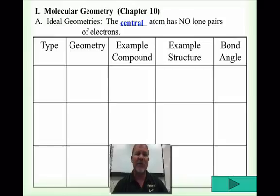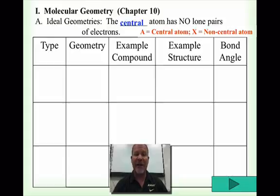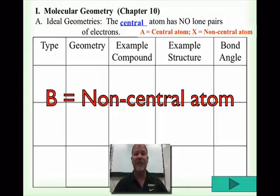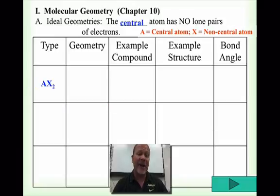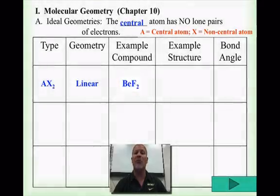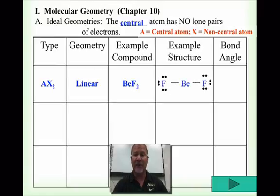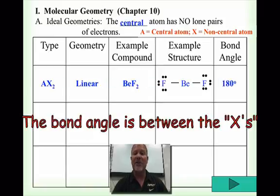The first type — I'm going to keep it very general — we call these ideal geometries. The central atom has no lone pairs of electrons; that's a key aspect of ideal geometries. I'll use capital letter A for the central atom and capital letter X for the non-central atom. In your textbook, capital B represents the non-central atom, but for us it's letter X. The first type is AX2: one central and two things on the opposite side. The geometry is called linear, with a bond angle of 180 degrees between the two X's. An example is BEF2 — beryllium in group 2 has two valence electrons and only wants to form two bonds.